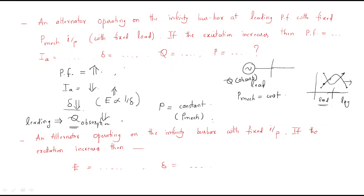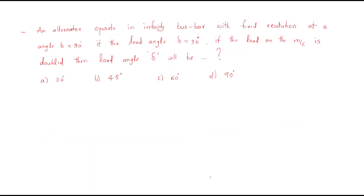Active power is constant because mechanical input is fixed. MCQ 2: An alternator operating on an infinite bus bar with fixed input — if excitation increases, the no-load EMF E increases, and since E is inversely proportional to load angle, the load angle δ decreases.